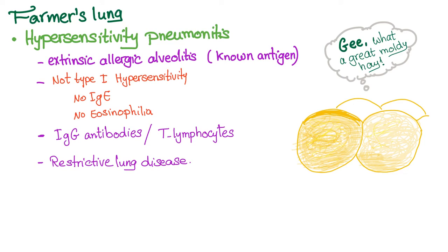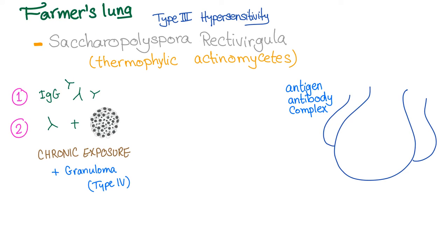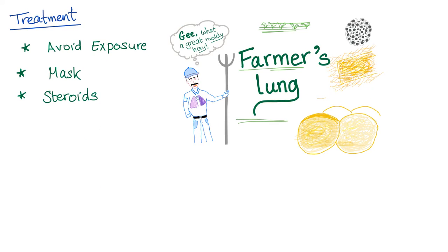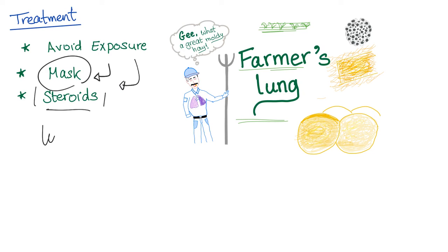Quick review: farmer's lung, also called hypersensitivity pneumonitis or extrinsic allergic alveolitis, involves a known antigen. It is not type 1 hypersensitivity, not related to IgE, and there is no eosinophilia. IgG antibodies and T-helper lymphocytes lead to restrictive — or sometimes obstructive — lung disease. Farmer's lung is a type 3 hypersensitivity; in chronic cases, it can be type 4. Caused by thermophilic actinomycetes (scientific name: Saccharopolyspora rectivirgula). First exposure produces IgG; subsequent exposure is faster and stronger; chronic exposure produces granuloma via type 4 delayed hypersensitivity. Treatment: avoid exposure, use a mask to minimize it, then steroids if needed, and lung transplant as a last resort.